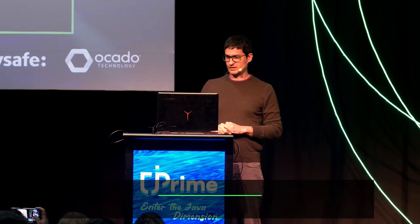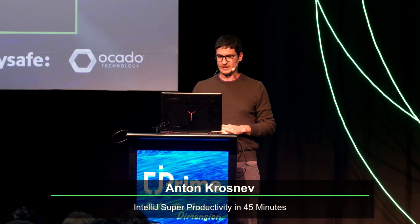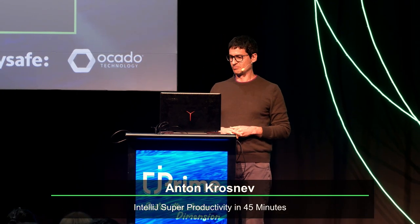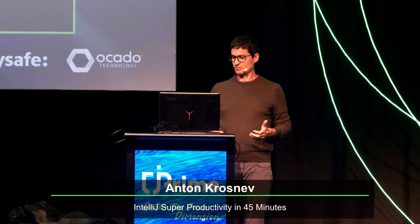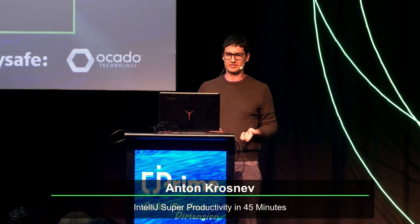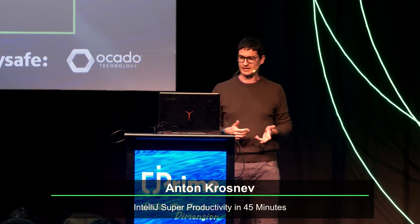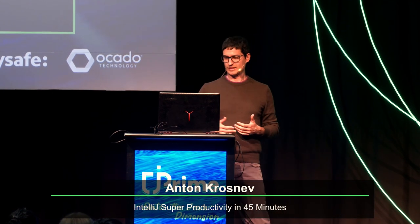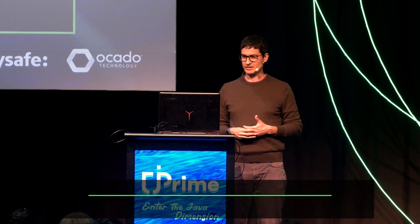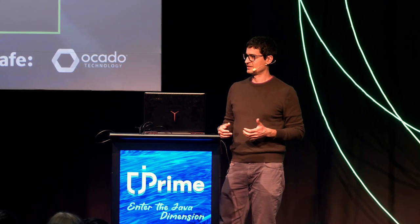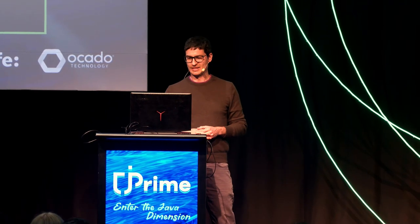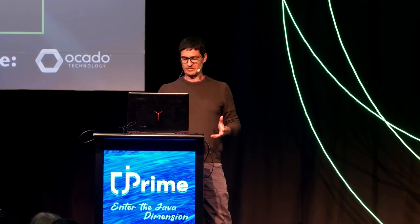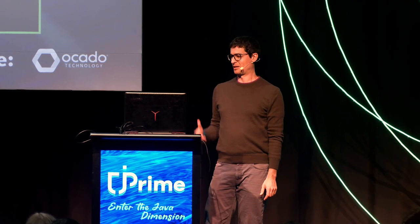My name is Anton Krosnev. I'm a Java developer with more than 15 years of experience. Currently I'm working at Experian. I have three kids — they're all boys actually — and in my free time I like to go to the mountains with my bike.